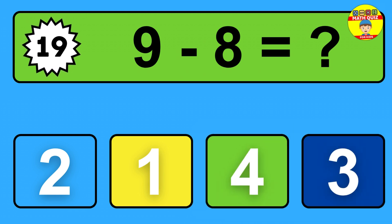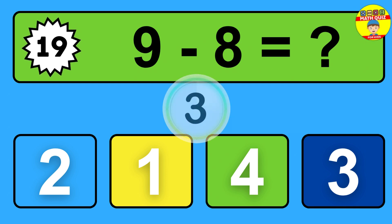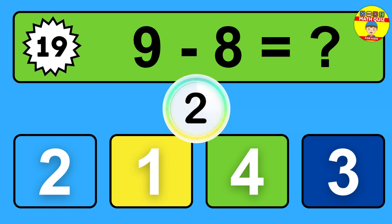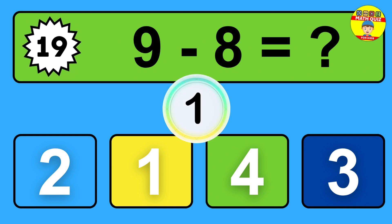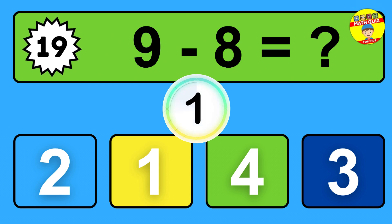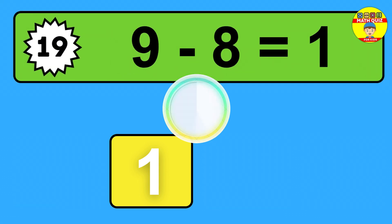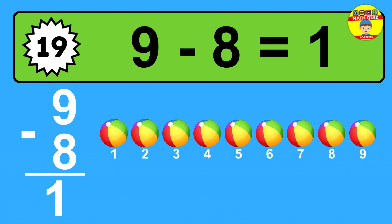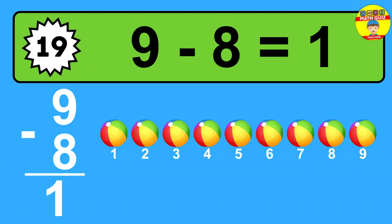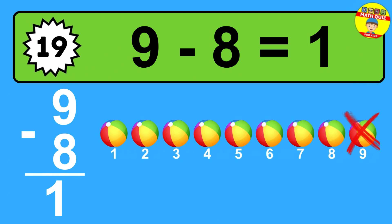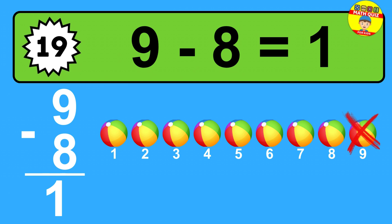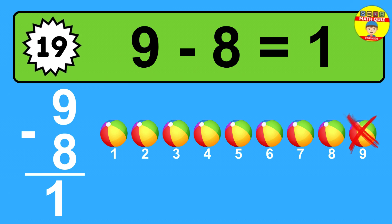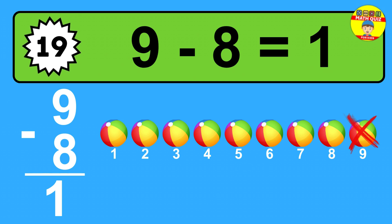Question nineteen: nine minus eight equals what? The answer is nine minus eight is one. Let's count it: one.